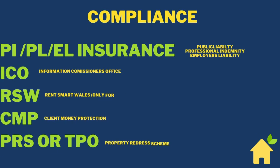You can see here I've abbreviated and then given you the breakdown. You need public liability, professional indemnity, and employer's liability insurance. You need to be registered with the ICO and follow the guidelines — that's the Information Commissioner's Office, which is all about GDPR and holding people's data. Rent Smart Wales — that's only if you're in Wales; visit their website and you'll need to register as a licensed agent. Client money protection will also be part of the compliance. PRS or TPO — that is the Property Redress Scheme or the Property Ombudsman — that is for the complaints procedure. Make sure that you read up on those.